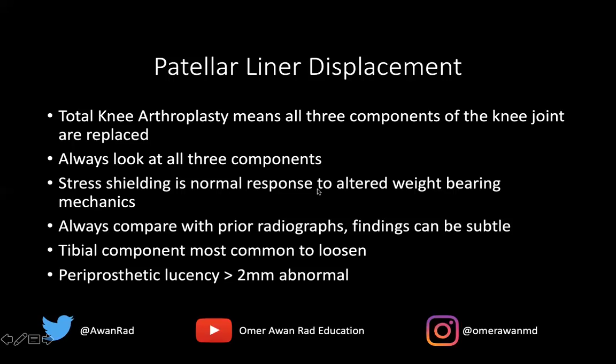You always want to look for any periprosthetic lucency measuring more than 2 millimeters. If you have more than 2 millimeters of periprosthetic lucency, your differential should include three things: aseptic loosening, infection, or particle disease — a macrophage or histiocyte-induced response to the arthroplasty material such as metal or polyethylene, which results in osteolysis and radiolucency around the bone. Those are the three things to consider: aseptic loosening, infection, and particle disease.